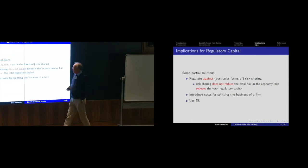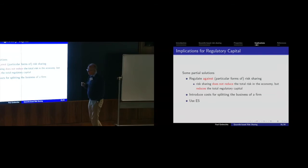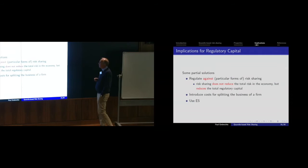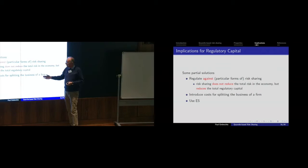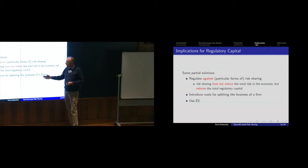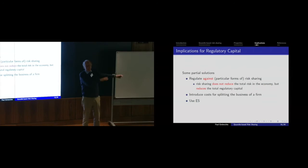Some partial solutions: we should regulate against particular forms of risk sharing; regulators should be aware. Risk sharing does not reduce the total risk in the economy, but does reduce total regulatory capital. You can reduce capital through crafty constructions. You can introduce costs for splitting a business — that's done now with balkanization and living-will constructions. But going from this paper to those huge issues, there's no simple solution.